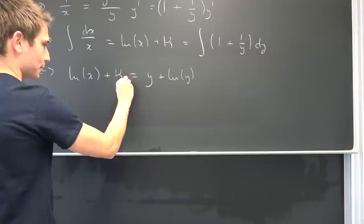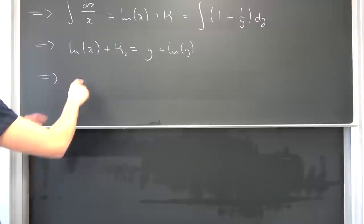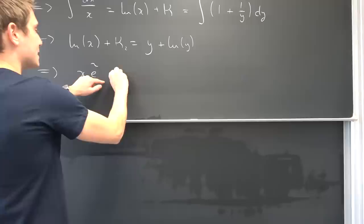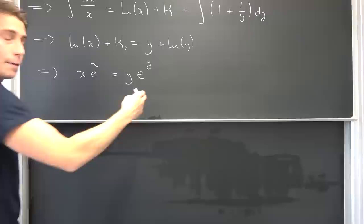Now we can take base e on both sides and then we are basically done. Leaving us with e to the natural log of x times e to the kappa. E to the kappa is just yet another constant. We are going to call it c snack. So x times c snack is thus equal to y times e to the y.